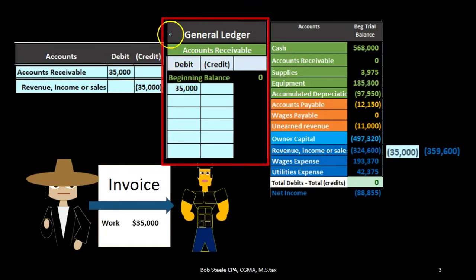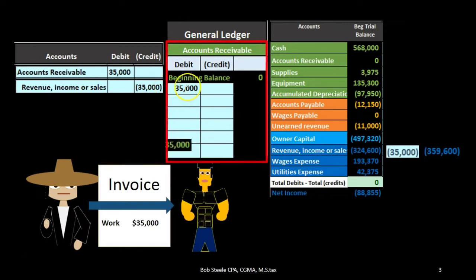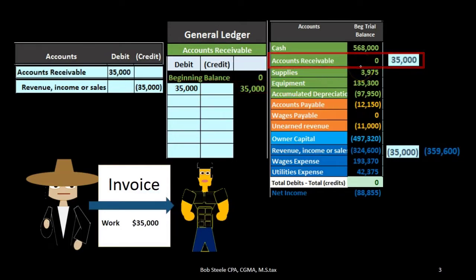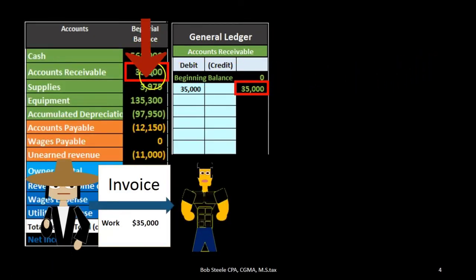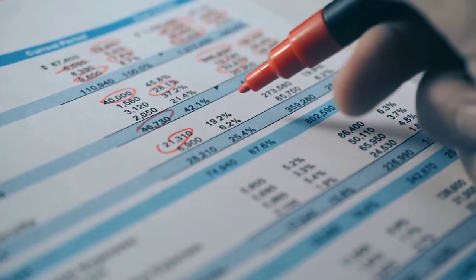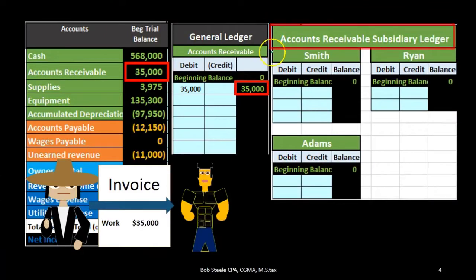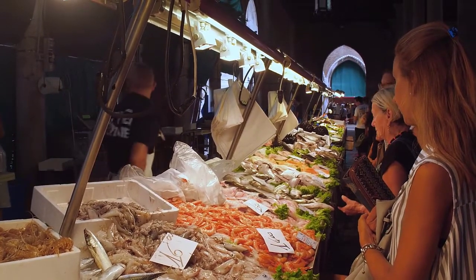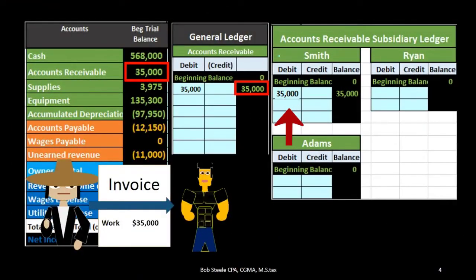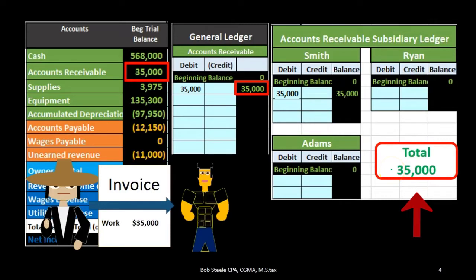We post accounts receivable first to the general ledger, increasing it by $35,000, which brings the total in the accounts receivable GL to $35,000 and similarly increases the trial balance to $35,000. We also want to see that in the subsidiary ledger broken out by customer, posting the same $35,000 by customer — in this case, Smith. Now the subsidiary ledger, general ledger, and trial balance all show $35,000, and that relationship always has to be maintained.